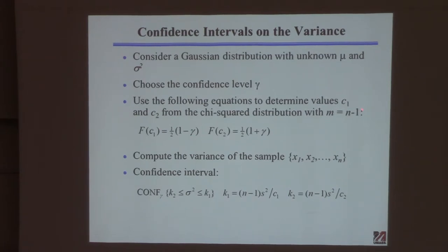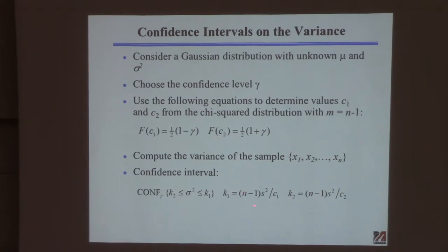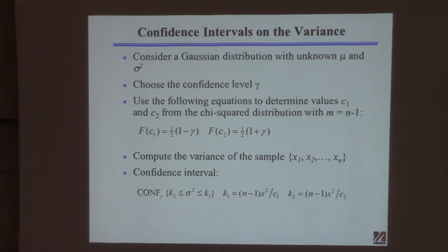Find what f equals, know the degrees of freedom, and find the corresponding c1 and c2 from the chi-square table — two values rather than one. Calculate the sample variance s-squared. Then calculate k1 and k2: for k1, take n minus one times s-squared divided by c1 (upper limit); for k2, divide by c2 (lower limit).